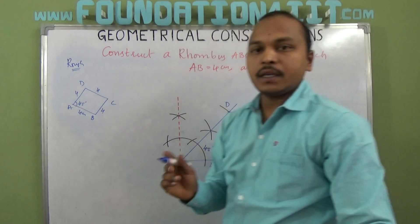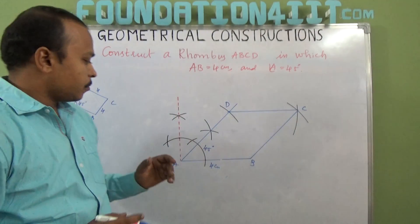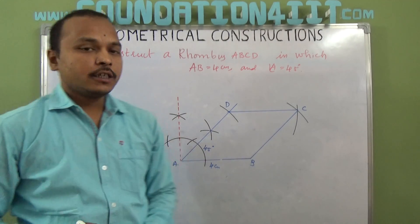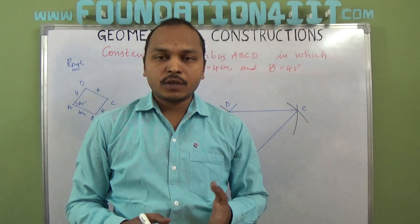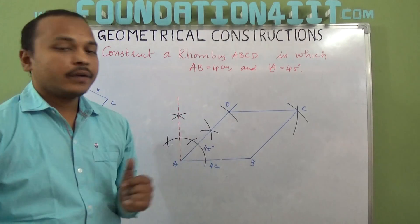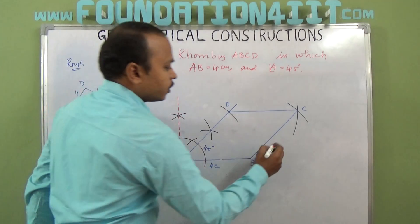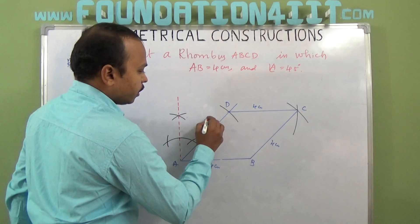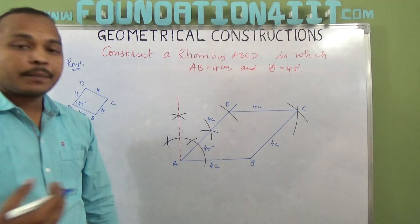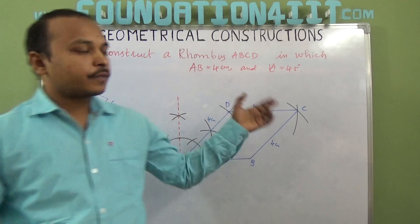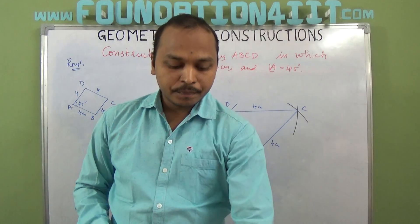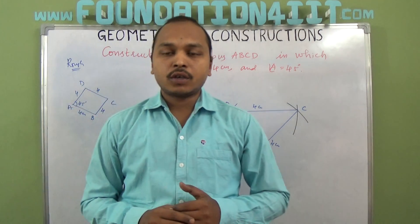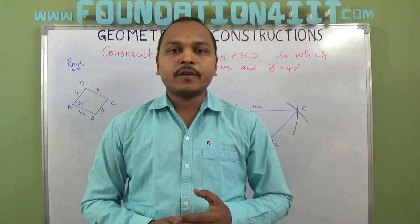So ABCD is a rhombus now. AB is 4 centimeters and angle A is 45 degrees. According to the properties, every side is equal, so BC is also 4 centimeters, CD is also 4, and DA is also 4 centimeters. Opposite angles are equal: if angle A is 45, then C is also 45. This way you can construct a rhombus when one side and an angle are given.